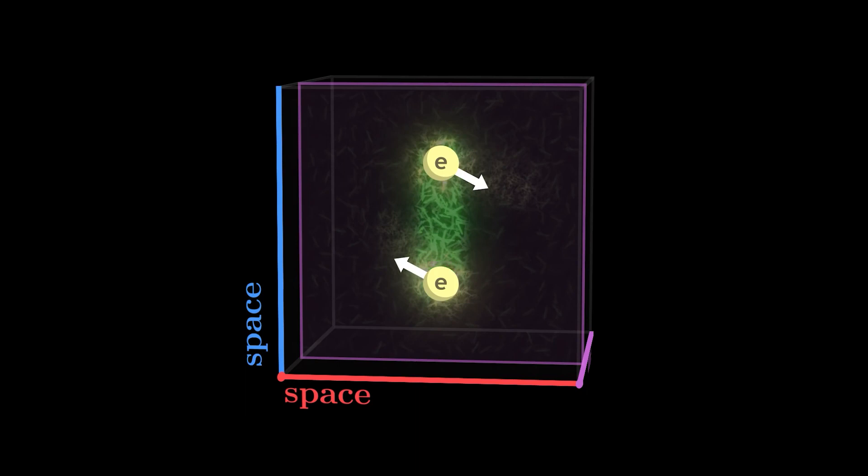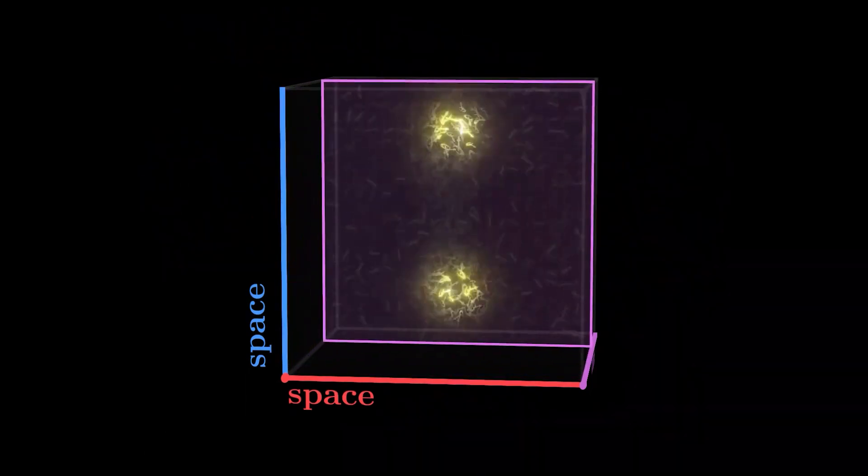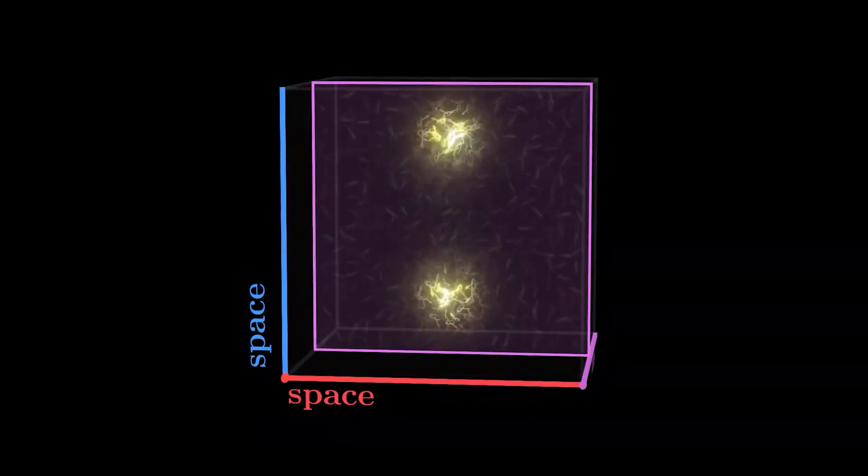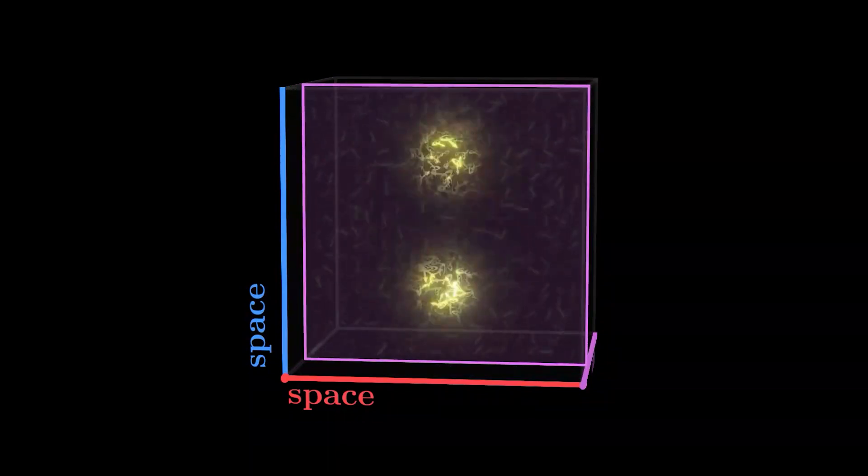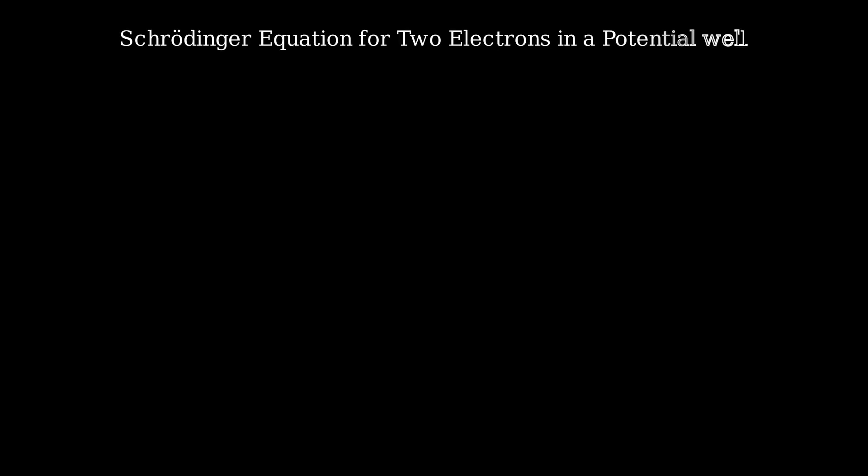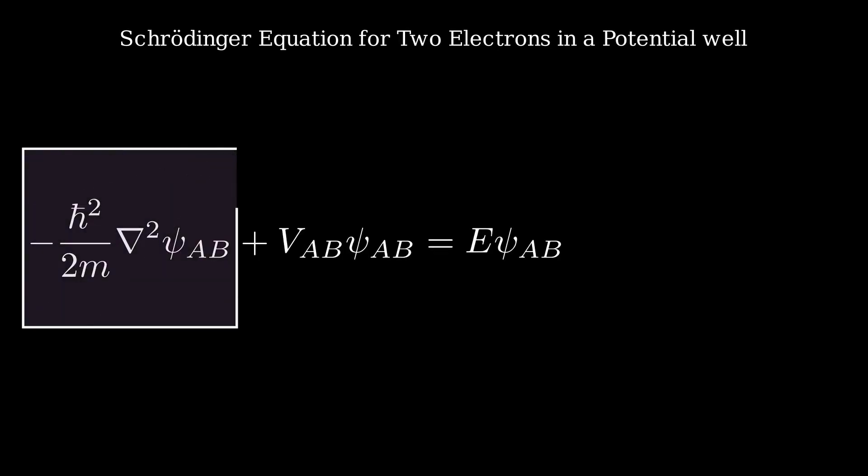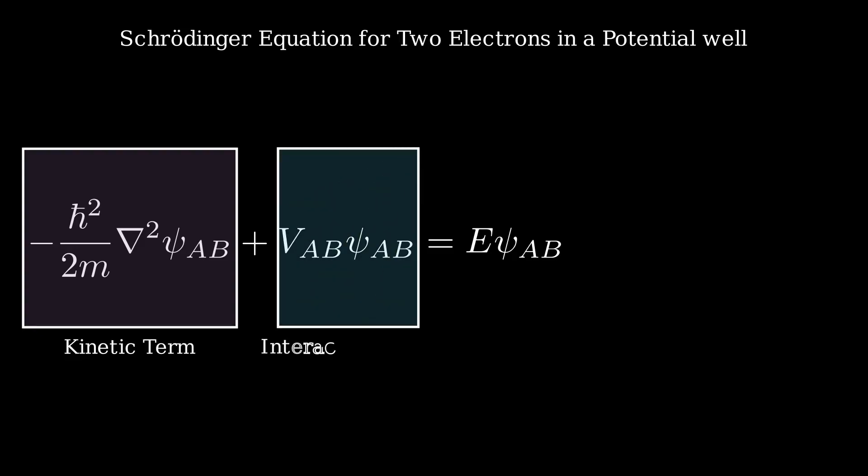For instance, if we can find two electrons in a box and call one of the electrons system A and the other electrons system B, their mutual repulsion generates an interaction term in the Schrodinger equation. Consequently, the problem can no longer be separated into components that solely depend on the individual electrons. There will always be an inseparable term with dependence on both electron A and electron B together.